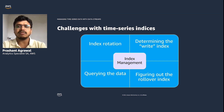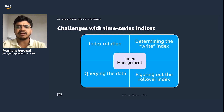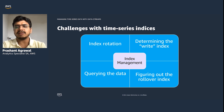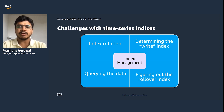Even if everything is working fine, managing time series indices requires index rotation. Log ingestion tools such as Beats and Logstash can help rotate indices by date, but what if you hit events like Black Friday or Cyber Monday where your data is significantly larger than usual? This creates data skew for those days. Once an index is rotated, you need to make sure the write index points to the current date index and that the index alias is rolled over as well — which is why data streams came into existence.